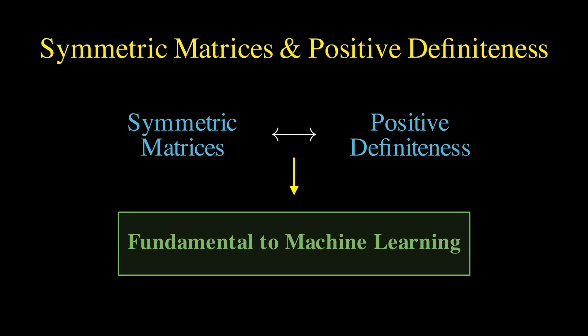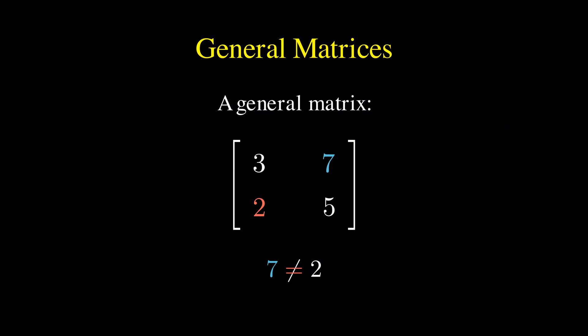So let's start by looking at what makes a matrix symmetric. If we have a general matrix, say a 2x2 matrix like the one depicted here, you can notice that the entry in the top right position, which is 7, is completely different from the entry in the bottom left, which is 2, and this is typical for most matrices you'll encounter.